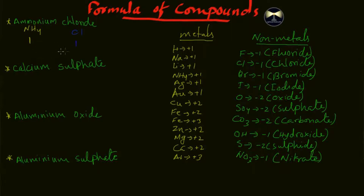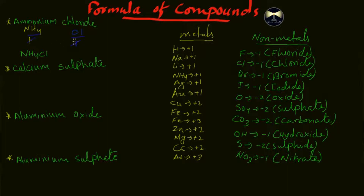When you write the oxidation numbers below, you cross multiply them. In this first example, since both oxidation numbers are the same — both are one — they get cancelled out. So what remains is NH4 and Cl, and you just write them together: the formula is NH4Cl. Remember: if the oxidation numbers of the metal and non-metal are the same, they cancel out.